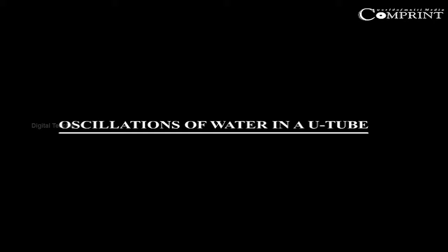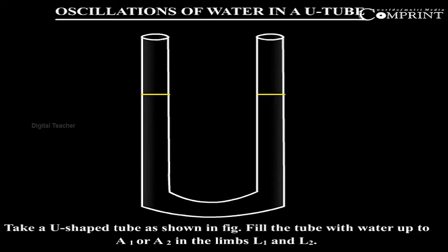Oscillations of water level in a U-tube. Take a U-shaped tube as shown in the figure. Fill the tube with water up to A1 and A2 in the limbs L1 and L2.